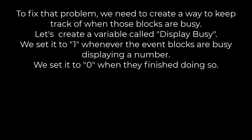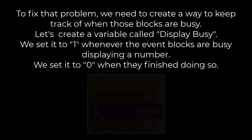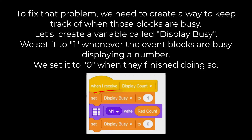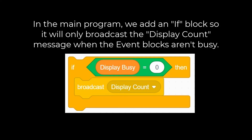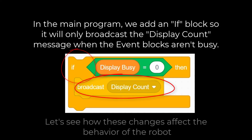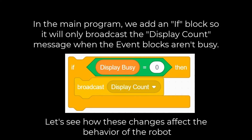To fix that problem, we need to create a way to keep track of when those blocks are busy. Let's create a variable called 'display busy.' We set it to one whenever the event blocks are busy displaying a number, and set it to zero when they finish. In the main program, we add an if block so it will only broadcast the 'display count' message when the event blocks aren't busy.